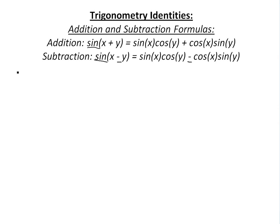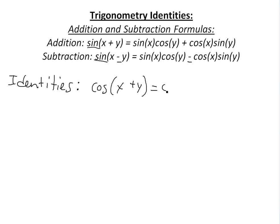So to prove this, we'll use other identities which I proved in my previous videos — you can take a look at them, they're in the info on this video. We're going to use the cosine addition identity: cosine of x plus y equals cosine x times cosine y minus sine x sine y. If it's a plus, you get a minus.